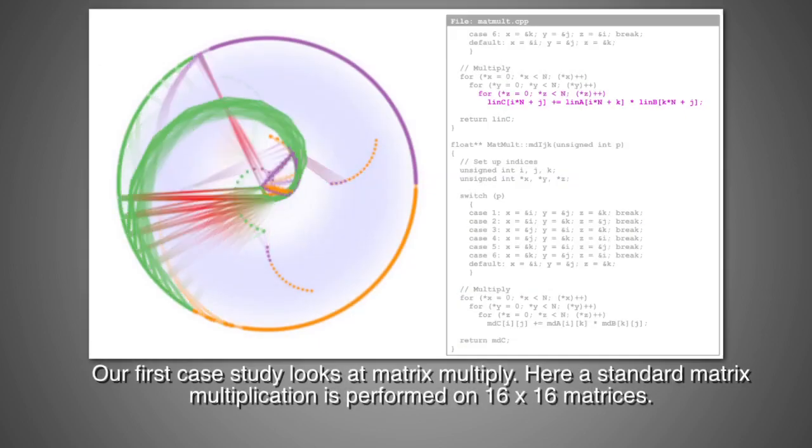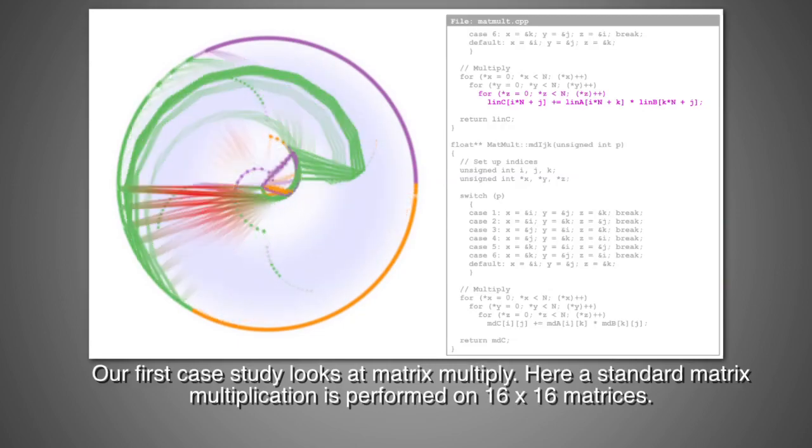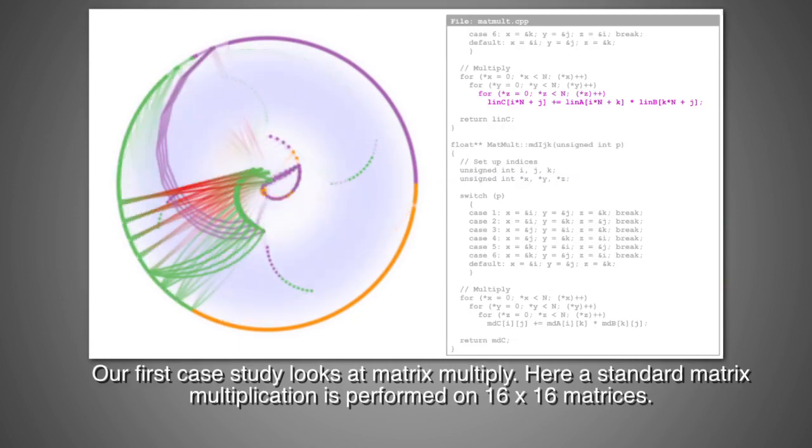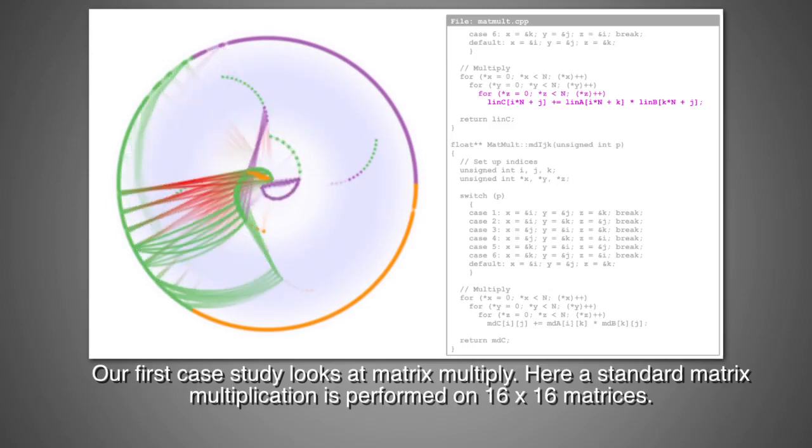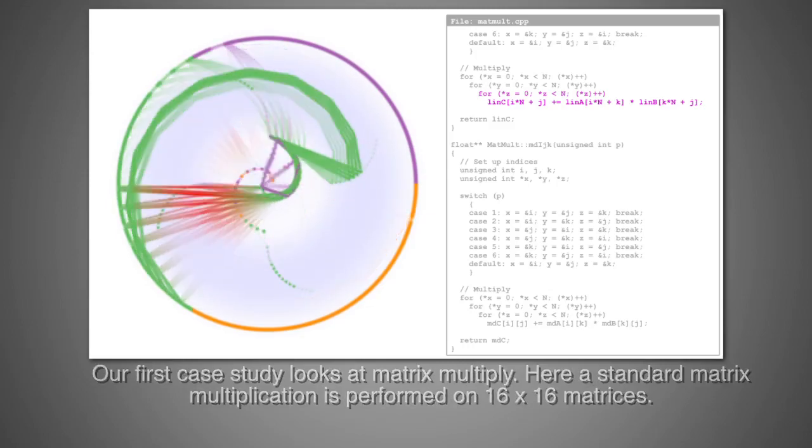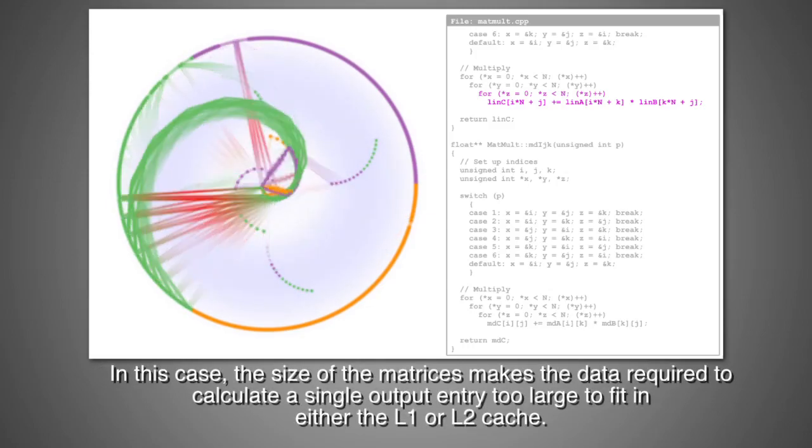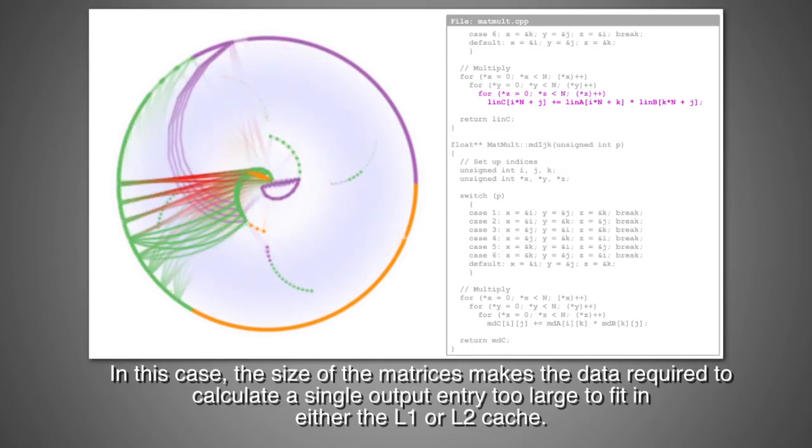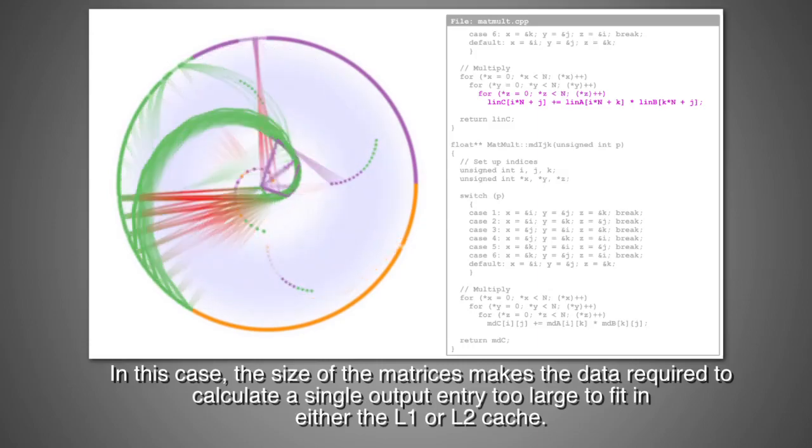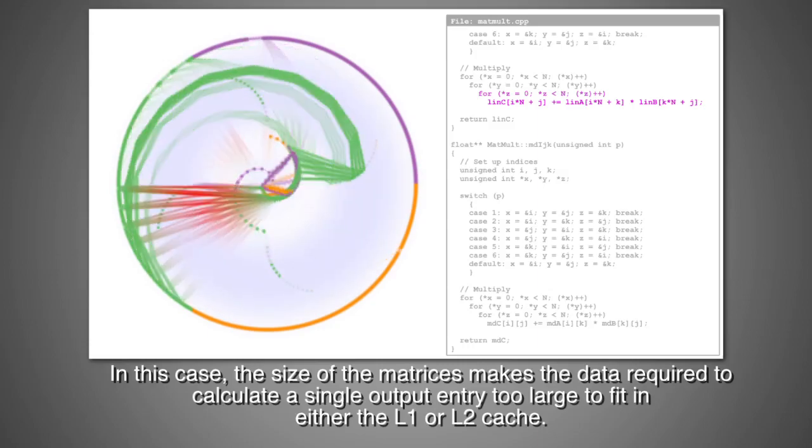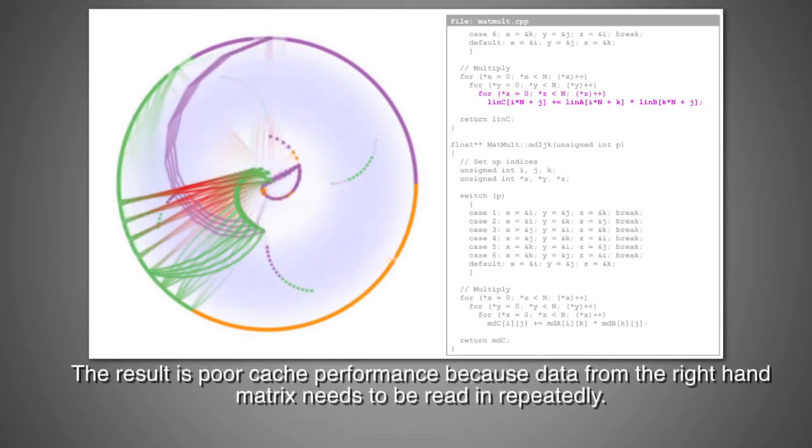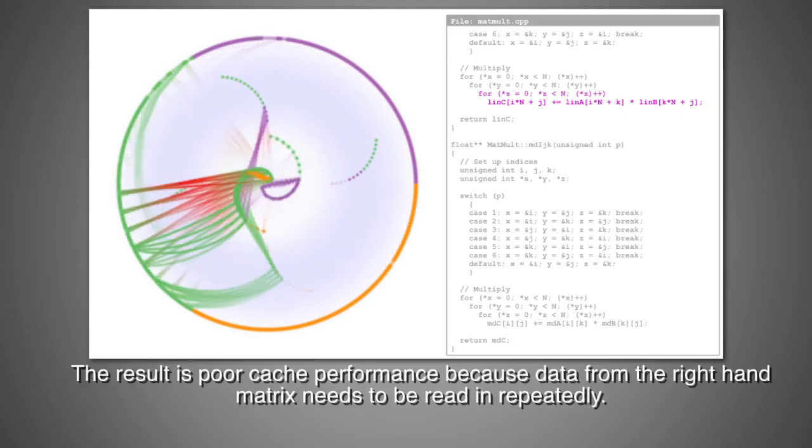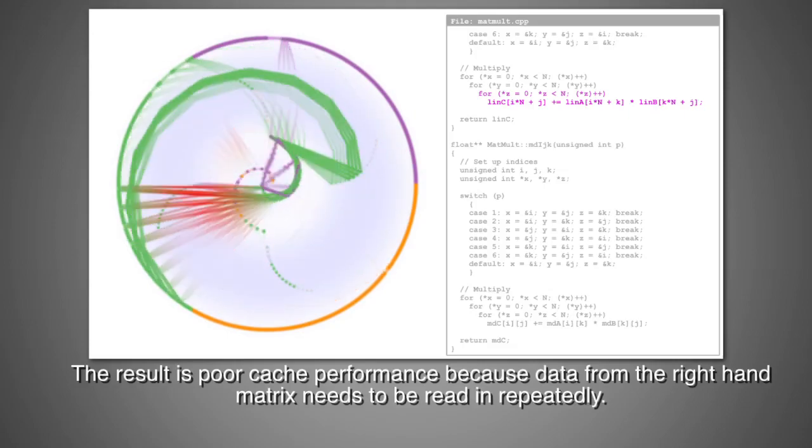Our first case study looks at a matrix multiply. Here, a standard matrix multiplication is performed on 16 by 16 matrices. In this case, the size of the matrices makes the data required to calculate a single output entry too large to fit in either the L1 or L2 cache. The result is poor cache performance because the data from the right-hand matrix needs to be read in repeatedly.